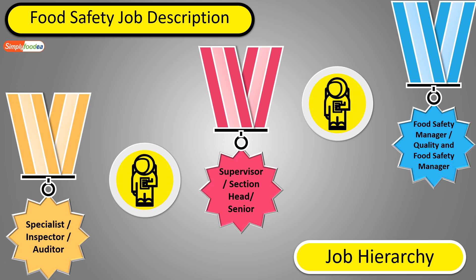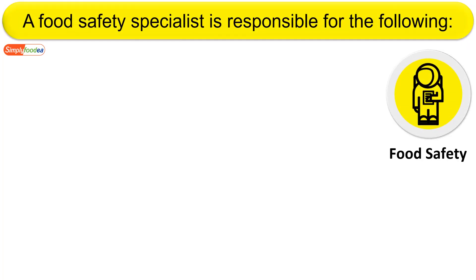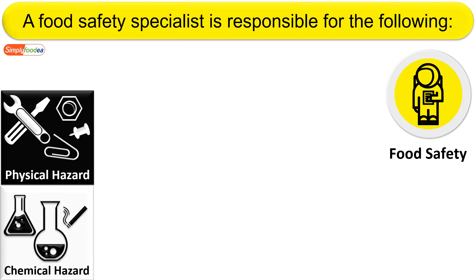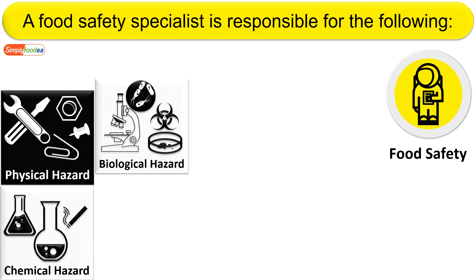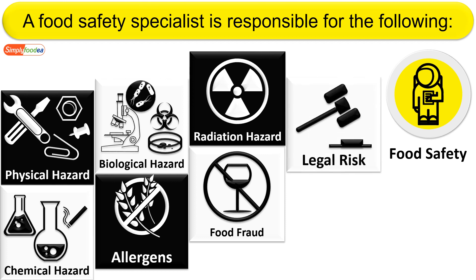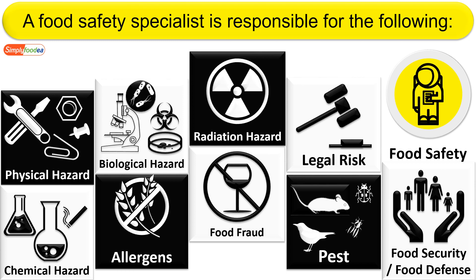Food safety specialists are responsible for the following: controlling physical hazards, controlling chemical hazards, biological hazards, allergens, and allergens management — which is very important — radiation hazards, food fraud, legal risk, pest control management, food security, and food defense. These are some of the food safety job description responsibilities.